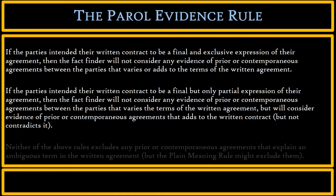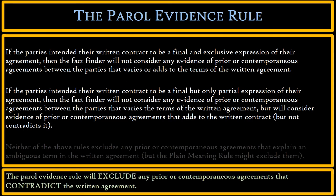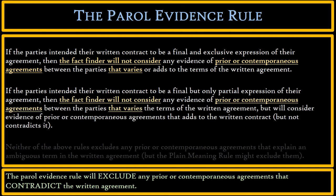Moving on to the rest of the Parole Evidence Rule: the Parole Evidence Rule will exclude any prior or contemporaneous agreements that contradict the written agreement. Where does the Parole Evidence Rule say that? It says: the fact finder will not consider any evidence of prior or contemporaneous agreements between the parties that varies the terms of the written agreement. Here, the word 'varies' means 'contradicts.'